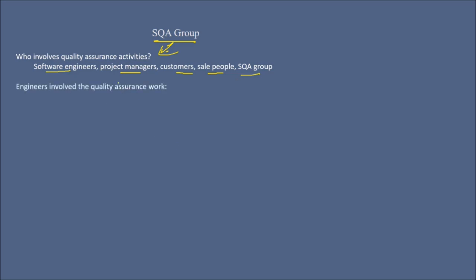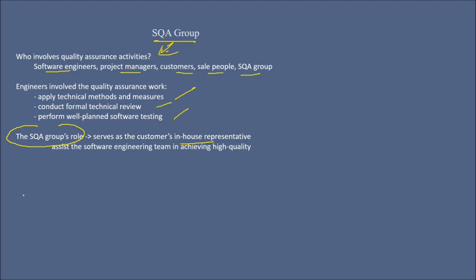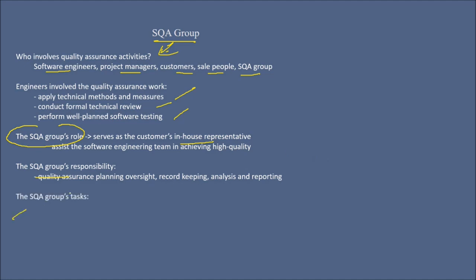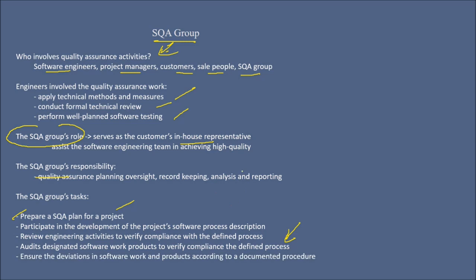The software quality assurance group involves software engineers, project managers, customers, stakeholders, and a separate SQA group. Engineers apply technical methods and measures, conduct formal technical reviews, and perform software testing. The SQA group's role is to serve as the customer's in-house representative, assisting the software engineering team in achieving a high quality product. SQA group responsibilities include quality assurance planning, oversight, guardkeeping, analysis, and reporting. Their tasks include preparing the SQA plan, participating in developing the project software process description, reviewing engineering activities to verify compliance with the defined process, performing audits, and recording any non-compliance to report.